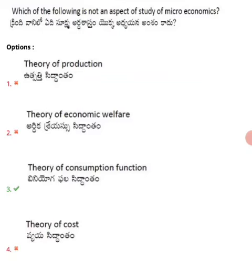Microeconomics studies all individual things — micro units. For example: individual household, individual firm, individual production theory, individual welfare theory, and individual cost theory. These are the things we study in microeconomics.